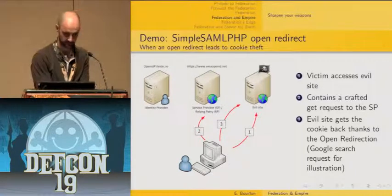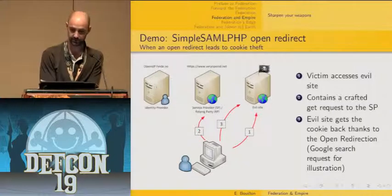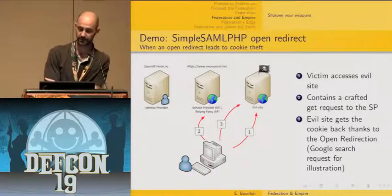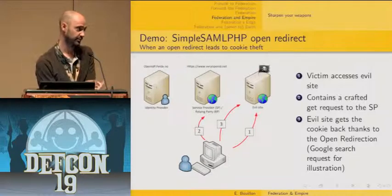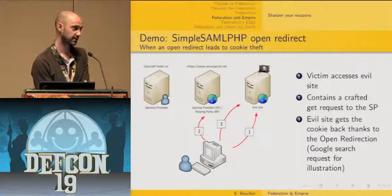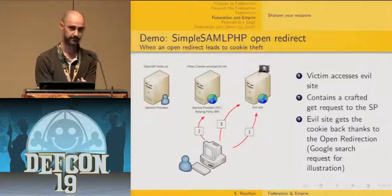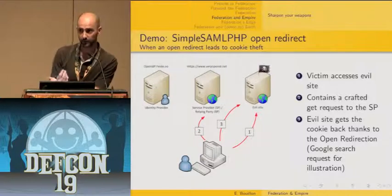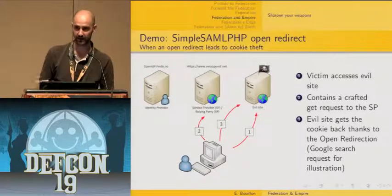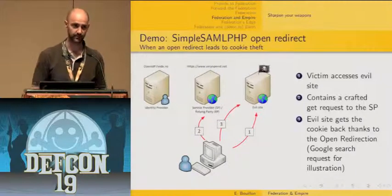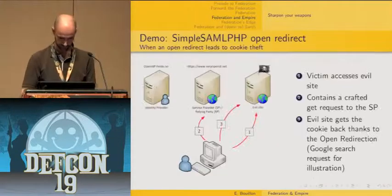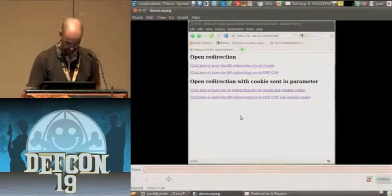The demonstration is a three-step process. First, the victim accesses the bad guy's site, which contains a crafted GET request to the service provider that leverages the open redirection vulnerability to send the cookie back to the attacker's controlled website. To make it more visual, I've crafted a Google search request using the cookie as an argument, so you can see the cookie appended to the Google search request. First you'll see just the open redirection vulnerability — a GET request goes to openidp.feide.no and redirects automatically to Google or to the DEFCON website.